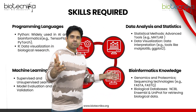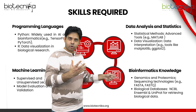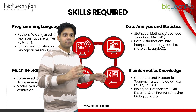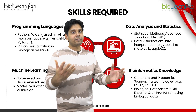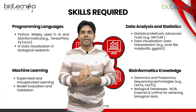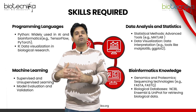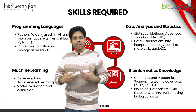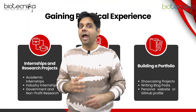Fourth is bioinformatics knowledge. You cannot move one inch in AI without bioinformatics. You need genomics and proteomics knowledge — that includes FASTA and FASTQ formats. You also need to work with biological databases like NCBI, Ensembl, and UniProt to retrieve biological data stored in biological libraries. All four skill sets can be learned at Biotechnica, and you can also do actual research and publish papers there.